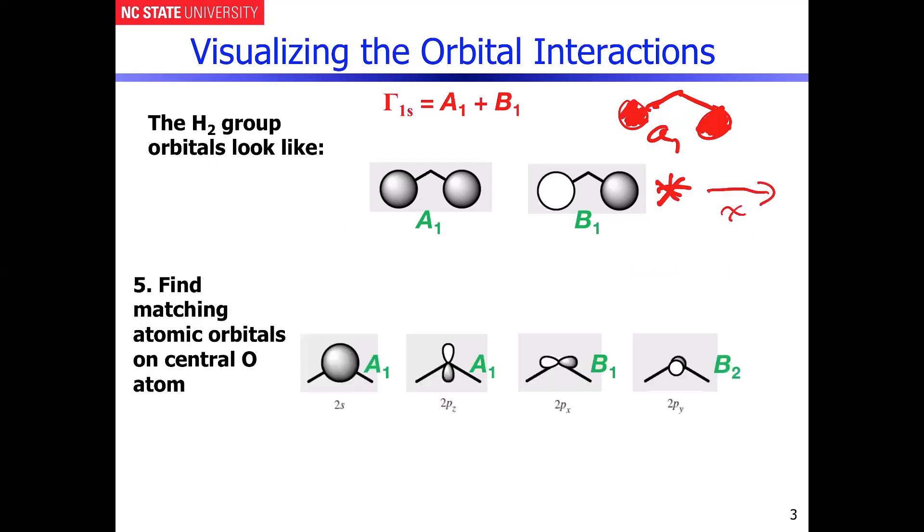So now what the next step in this process is going to be is to figure out what atomic orbitals have symmetry matches to the H2 group orbitals that we constructed in this process. And very clearly what winds up happening is you see the situation where you have now three different A1 combinations that we have to consider. And the interesting part about this is you'll see this happening much later in other examples that we do as the semester progresses.